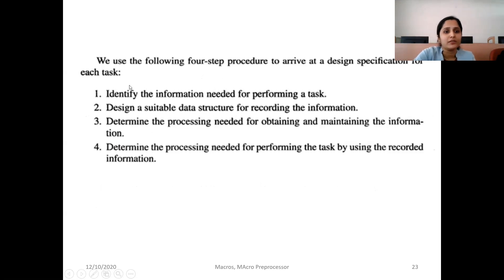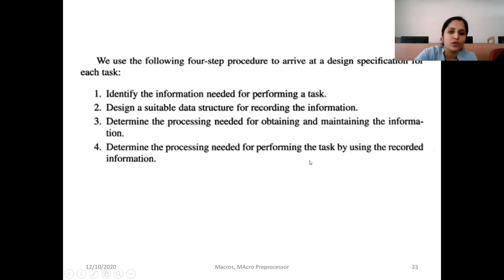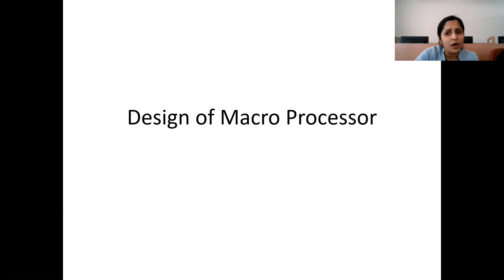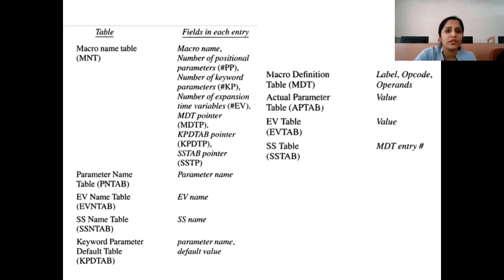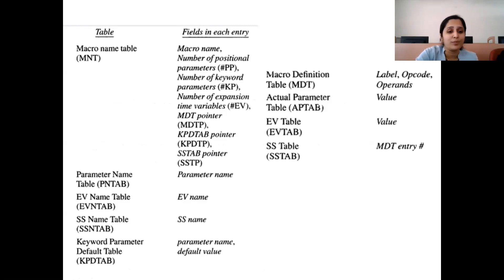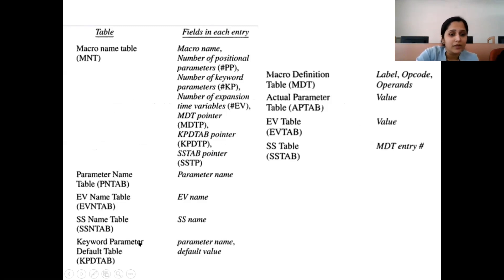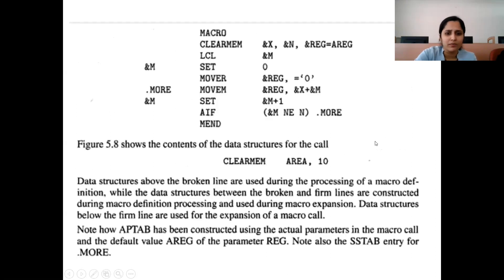A four-step procedure is used: first, identify the information needed for performing the task; second, design suitable data structures for recording that information; third, determine the processing needed for obtaining and maintaining the information; fourth, determine the processing needed for performing the task using recorded information. The data structures used include: macro name table, parameter name table, expansion-time variable name table, sequence symbol name table, keyword parameter table, and default table — each table having different column values.